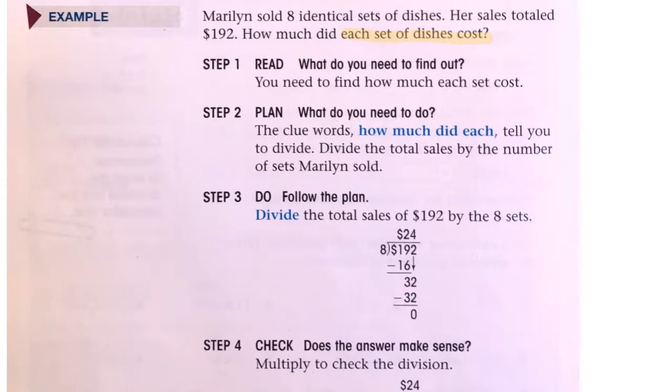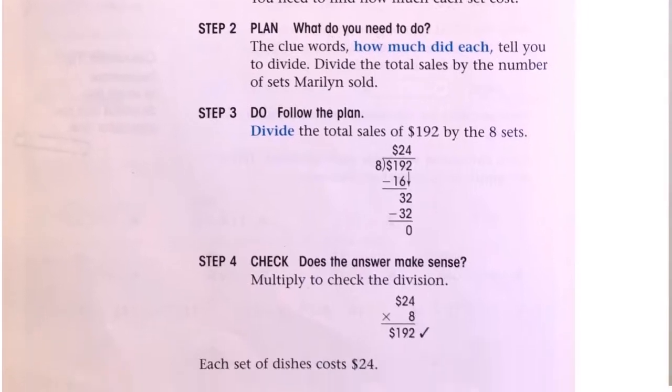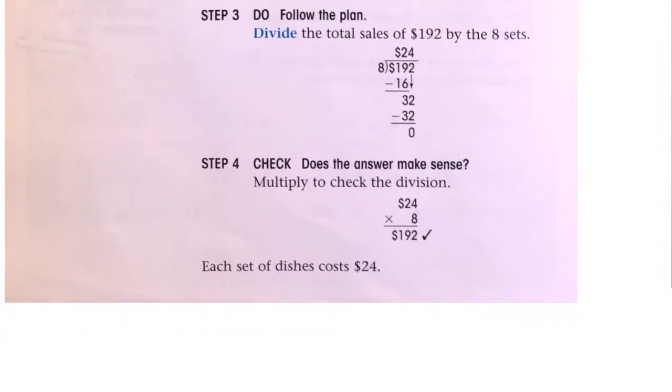Step four is to check. Does the answer make sense? We can multiply to check the division. Twenty-four, the quotient, times the divisor which is eight, gives us one hundred and ninety-two, which matches the dividend. Each set of dishes cost twenty-four dollars.